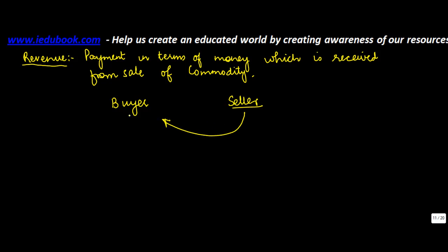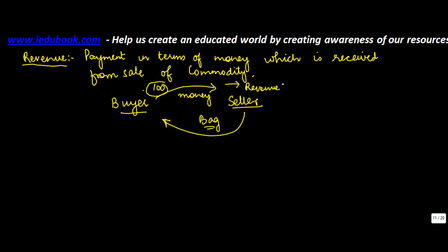In any economic activity there is a buyer and there is a seller. Let's say the seller sells any commodity to the buyer — for example, a bag, this could be a school bag or whatever bag you want to consider. He gives the bag to the buyer, and the buyer gives money to the seller. Let's say he paid 100 rupees to the seller — so this 100 is basically the revenue of the seller.